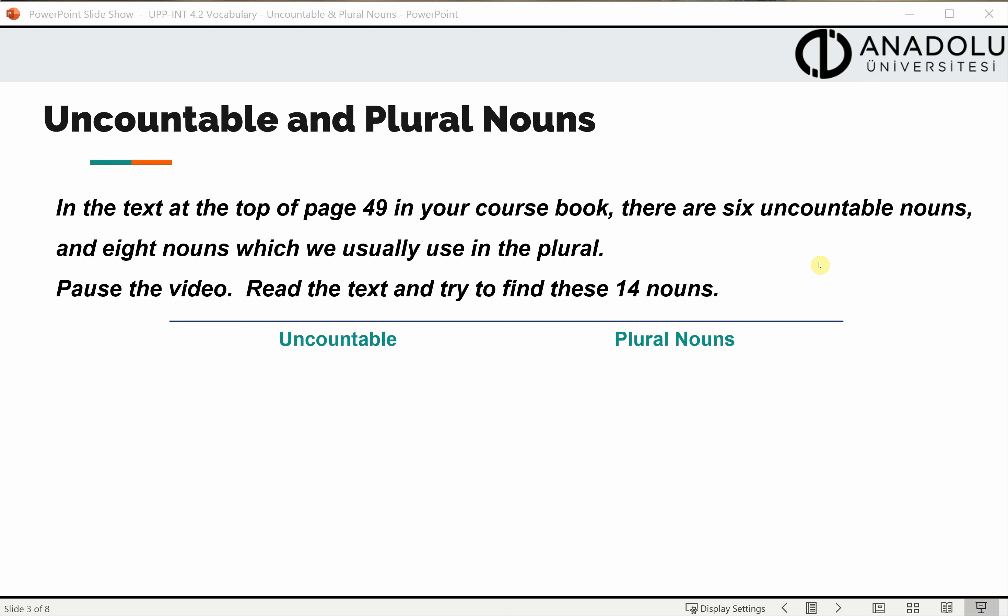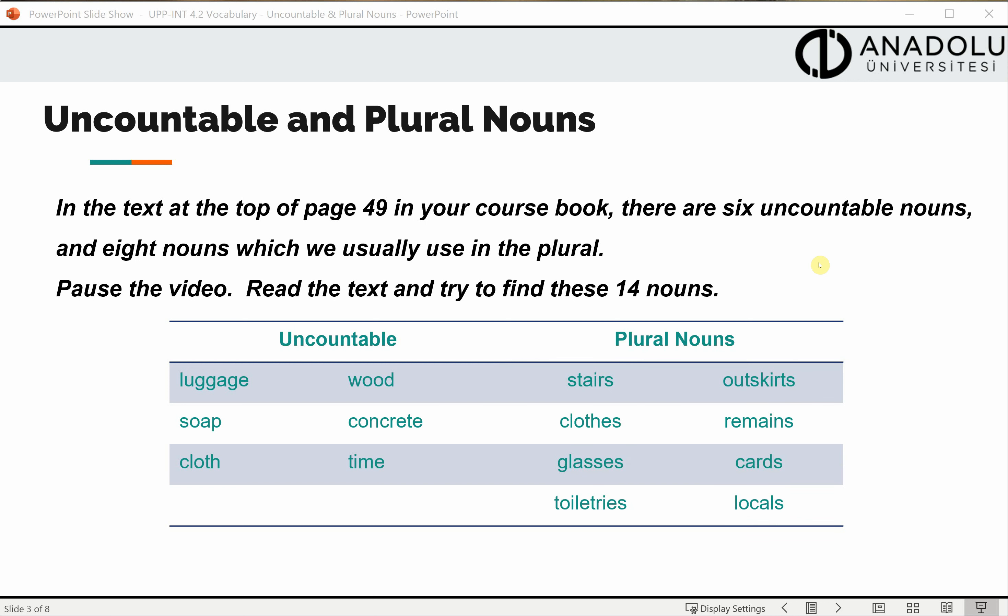Examples of uncountable nouns used in this text are luggage, soap, cloth, wood, concrete, and time. Plural nouns: stairs, clothes, glasses, toiletries, outskirts, remains, cards, and locals.